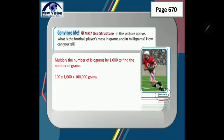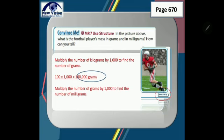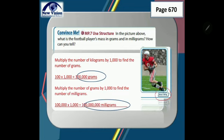So in grams, the football player weighs 100,000 grams. Next, multiply the number of grams by 1,000 to find the number of milligrams: 100,000 times 1,000 equals 100,000,000 milligrams. So 100 kg is equal to 100,000 grams and equals 100,000,000 milligrams.